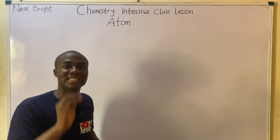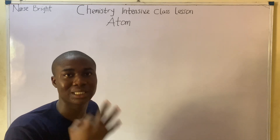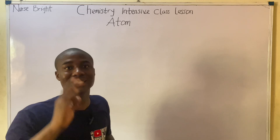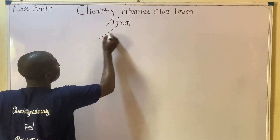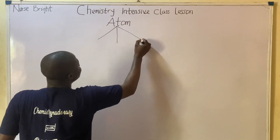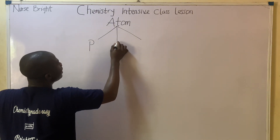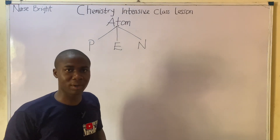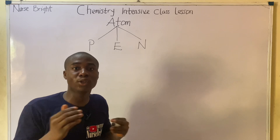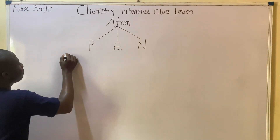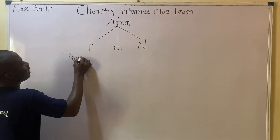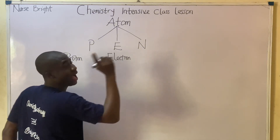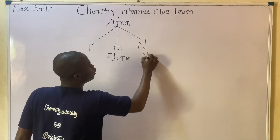An atom is made up of three important subatomic particles. I call them PEN — P, E, N. These are the subatomic particles. P here means proton, E here means electrons, and N here means neutrons.